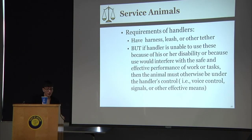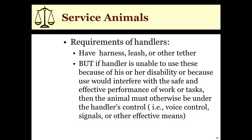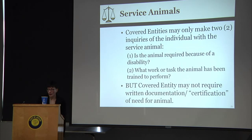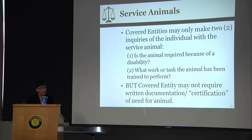With service animals, they are required to have some kind of harness, leash, or tether unless the individual's physical impairments prevent that. They are not required to have any special vest or identification. There are only two permissible questions you may ask of someone who brings an animal into a facility: is it an animal required because of a disability, and what work or task has the animal been trained to perform? Written documentation or certification may not be required. Comfort and emotional support animals are not covered, but the range of tasks a service animal can be trained to perform is very broad.